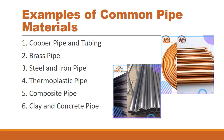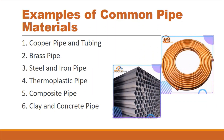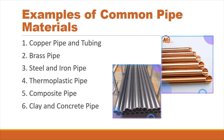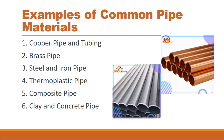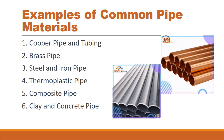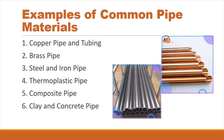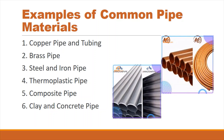Examples of common pipe materials include: copper pipe and tubing, brass pipe, steel and iron pipe, thermoplastic pipe, composite pipe, and clay and concrete pipe.